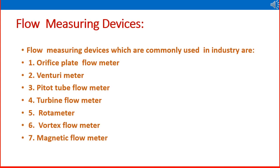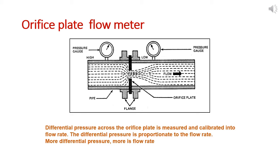Let us discuss various types of flow measuring devices. Flow measuring devices which are commonly used in industry are orifice plate flow meter, venturi type meter, pitot tube meter, turbine flow meter, rotameter, vortex flow meter, and magnetic flow meters.